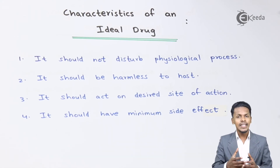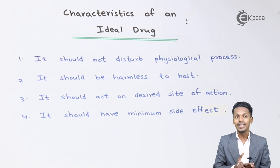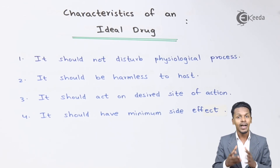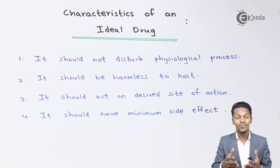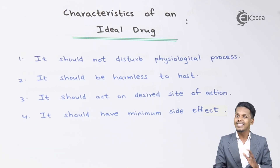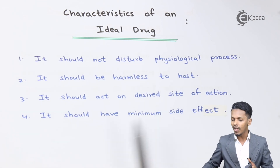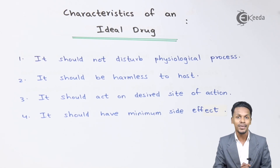It should have minimum side effects. Whenever we consume a medicine or a drug, it cures that particular disease, but there are also chances of side effects. Even though by consuming a drug our disease can be cured, other side effects can also start for which we have to consume another drug. So an ideal drug should not have side effects. These are the four main characteristics of an ideal drug.